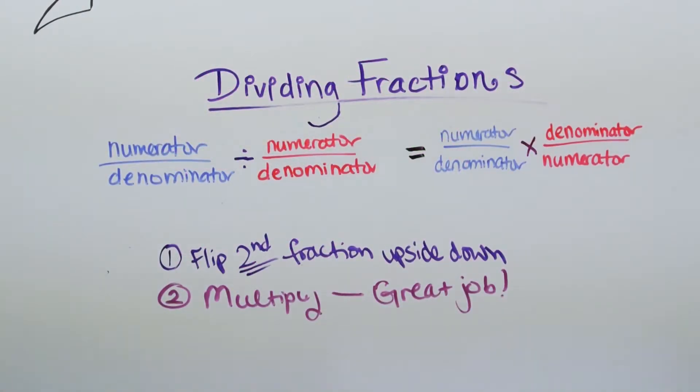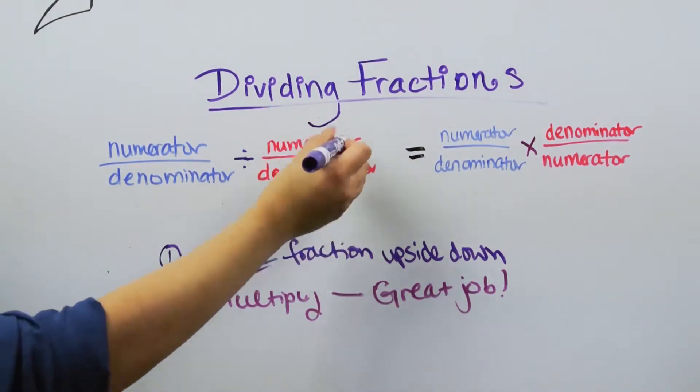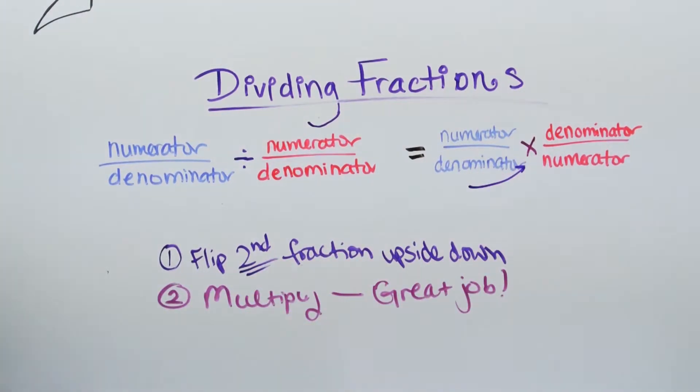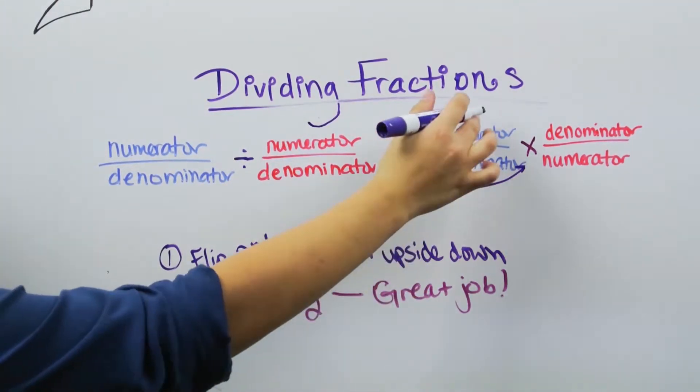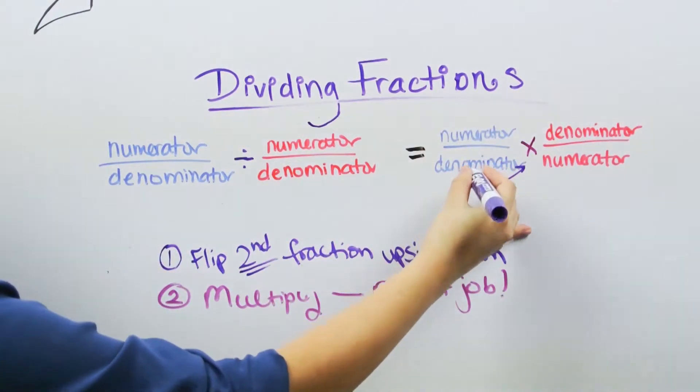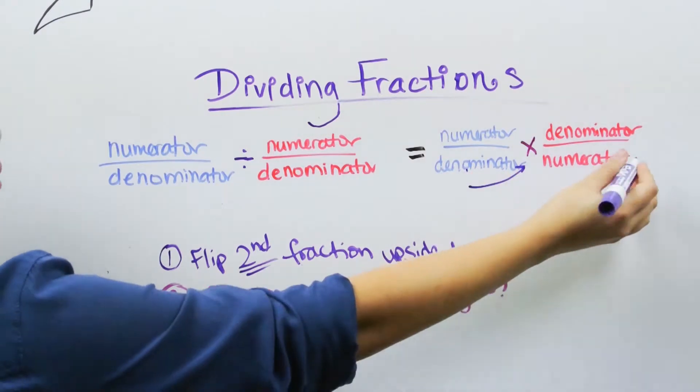But what does this have to do with division? Well, the really cool thing about dividing fractions is that all you have to do is flip the second fraction around and then multiply. This means that you end up multiplying the first numerator by the second denominator on the top, and the first denominator by the second numerator on the bottom.